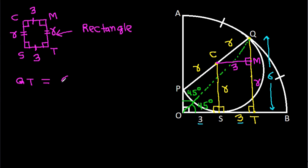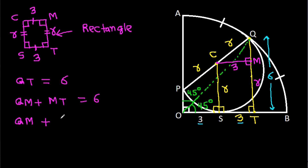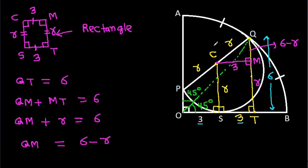We have QT = 6, and QT = QM + MT = 6. Since MT = R, we get QM = 6 minus R.